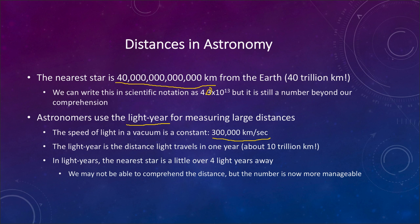Because light always travels at the same speed, we can define a light year as the distance that light travels in one year. So it is a measure of distance, not time, and that is about 10 trillion kilometers. In terms of light years, the nearest star is a little over four light years away — a number we can actually comprehend. Comparing a star four light years away to one eight light years away is much easier than comparing 40 trillion to 80 trillion kilometers.